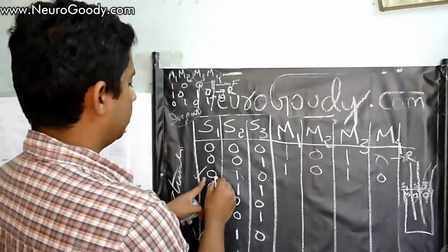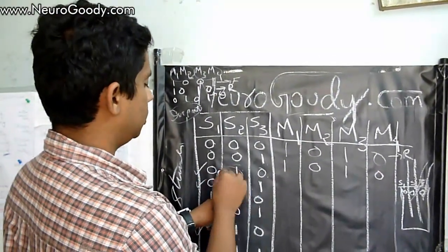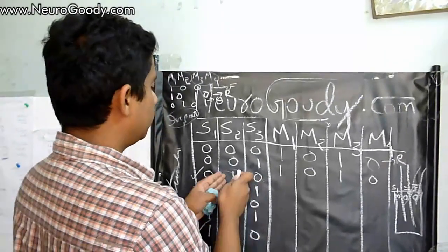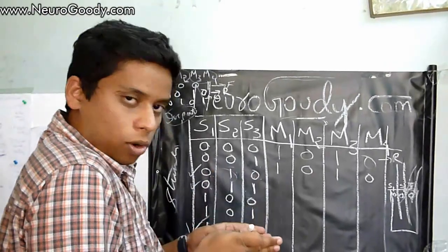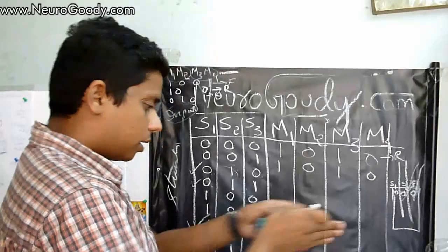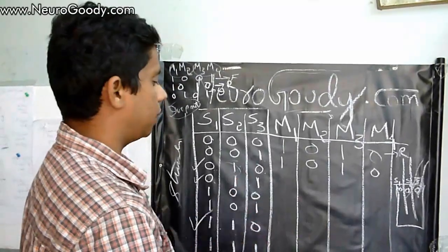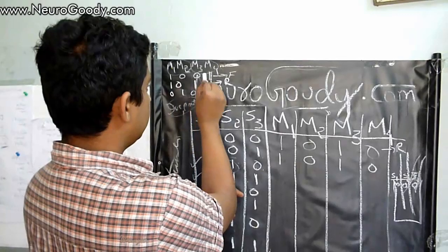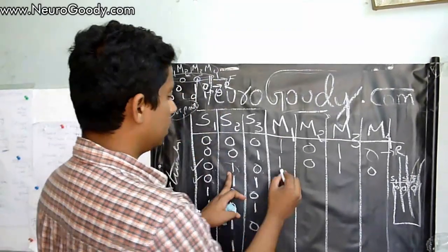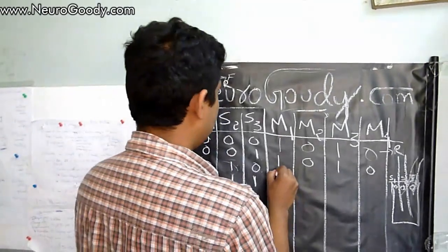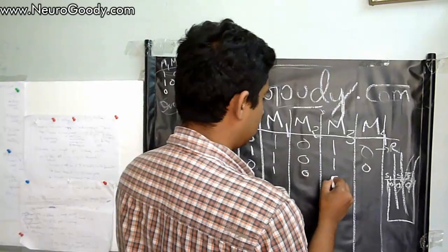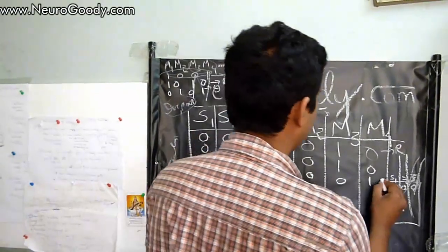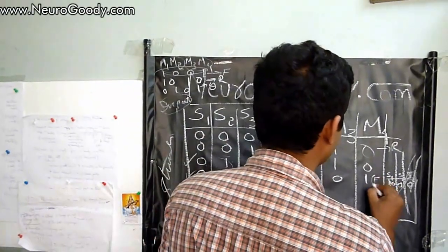Coming to the third condition 101: this is the forward condition because the line is in the center part of the robot, so the robot should go straight. For the straight condition I have assumed the binary value 1001.